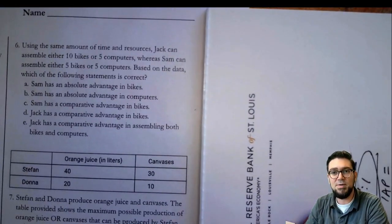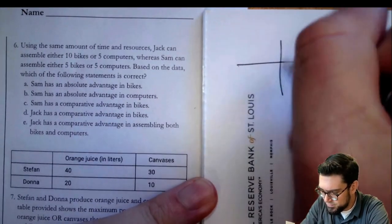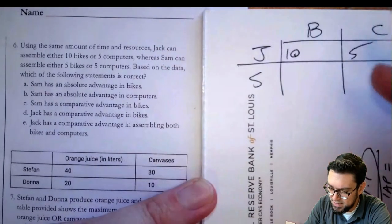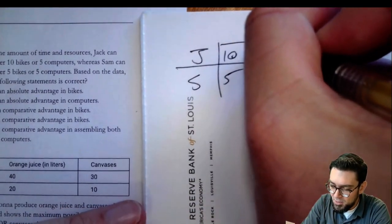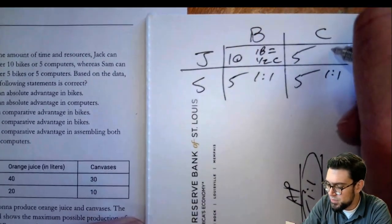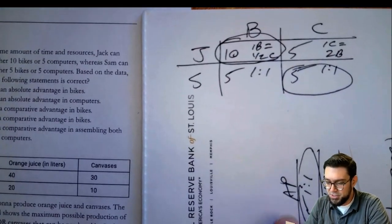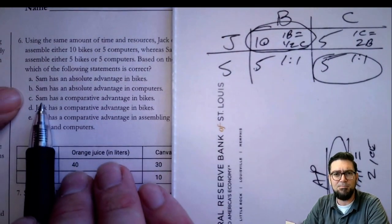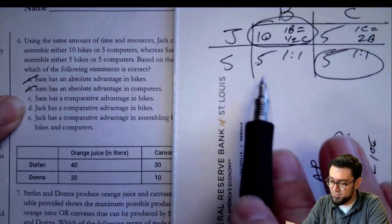Question five: Jack and Sam make bikes and computers. Jack can make 10 bikes or five computers. Sam has a one-to-one relationship. For Jack, one bike equals one-half of a computer and one computer equals two bikes. That gives Sam comparative advantage in computers and Jack in bikes. Sam does not have absolute advantage in bikes — he can only make five and Jack can make 10. They tie on computers. Sam does not have comparative advantage in bikes — Jack does. The answer is D: Jack has comparative advantage in bikes.